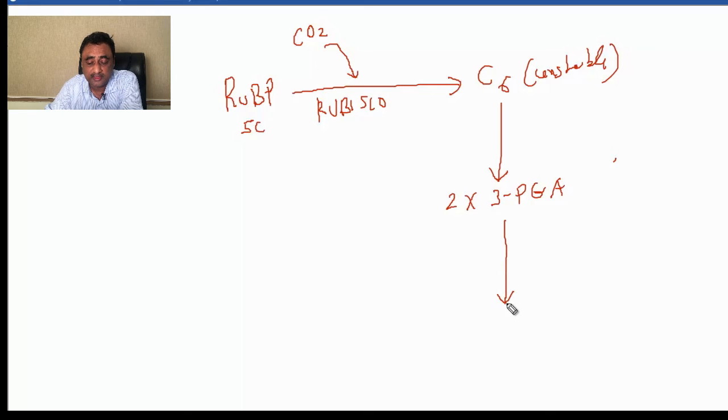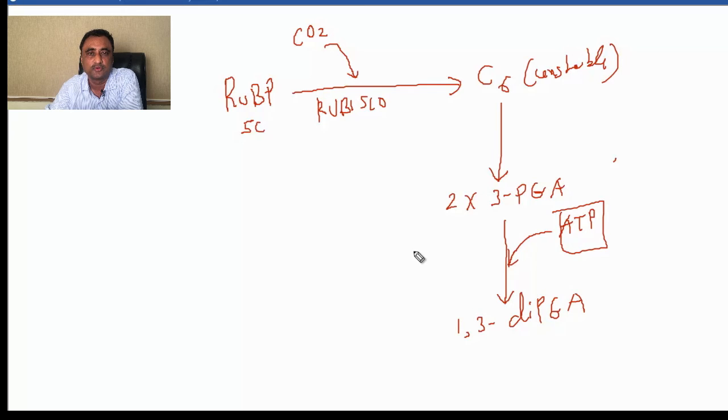This 3-PGA gets converted into 1,3-di-PGA with the addition of ATP. What is the source of ATP? It's the same ATP coming from the assimilatory powers formed during the light reaction. The enzyme phosphoglycerokinase catalyzes the formation of 3-PGA into 1,3-di-PGA. This is the second step, called phosphorylation.